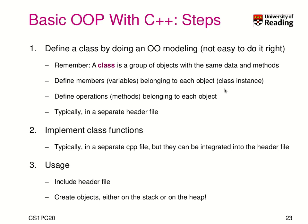Each student should have a matricle number, each student should have a birthday, each car should have its own attributes. Once we've defined the members, we define the operations, which in object-oriented programming are called methods, because they belong to each object. They are more than just a function — methods belong to an object, and an object has access to its members and operations.